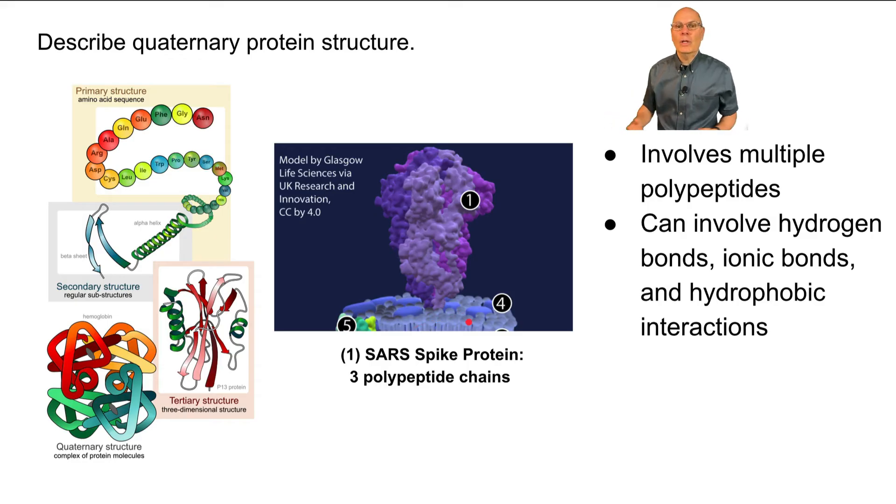This is kind of cool in light of our recent history. The spike protein that's on the outside of SARS-CoV-2, and in fact, all the SARS viruses, is also a quaternary protein that's made of multiple folded polypeptide chains.